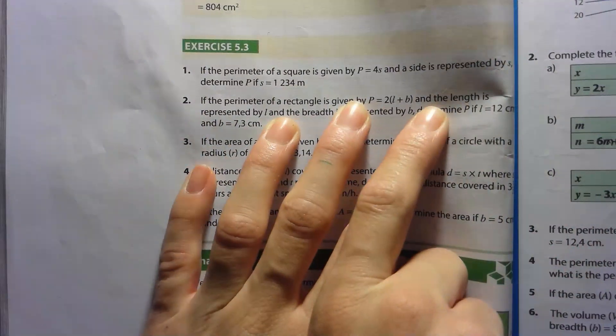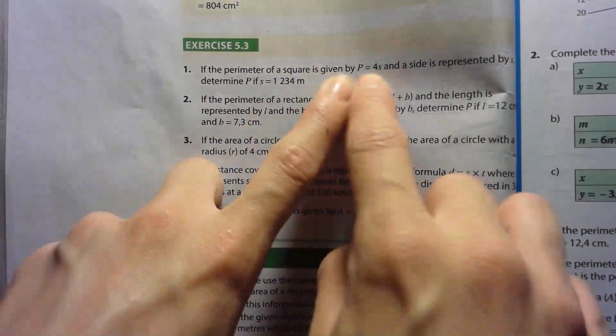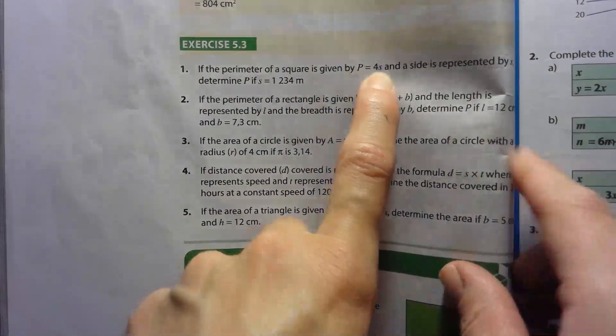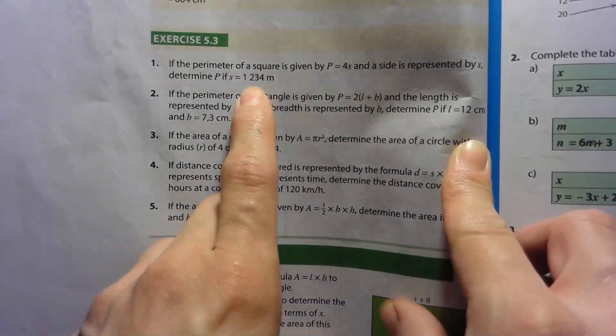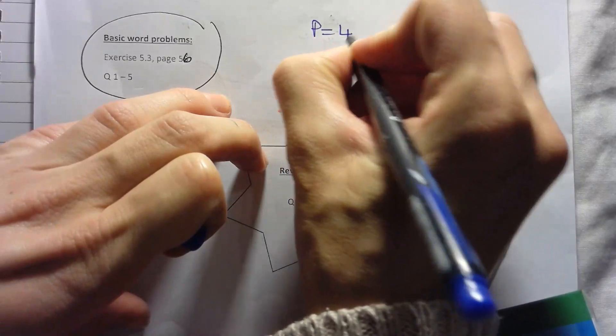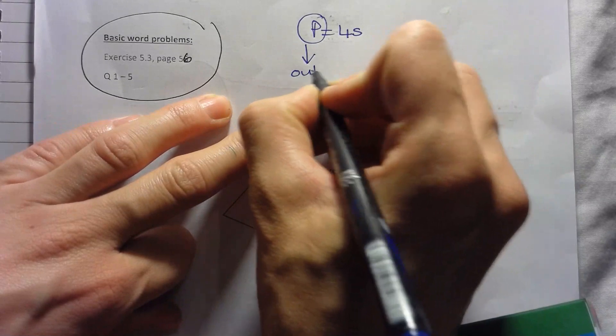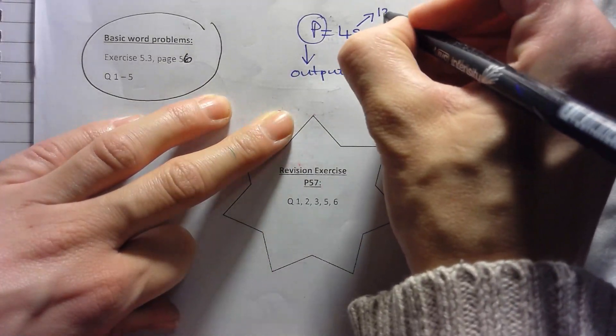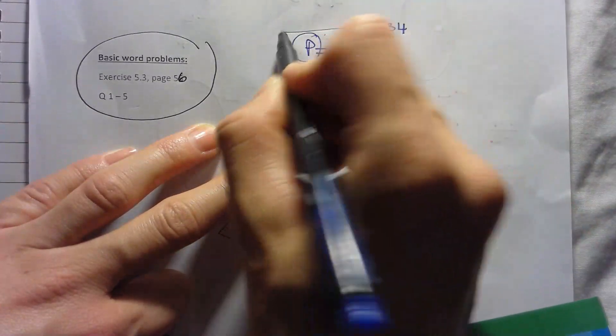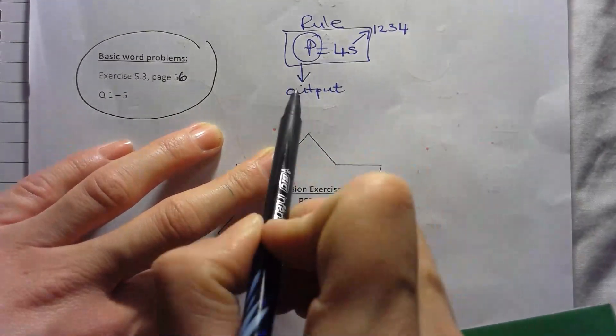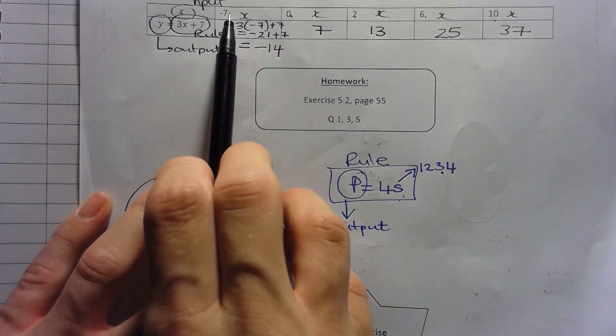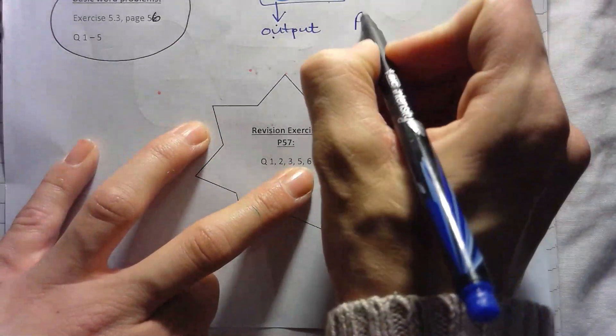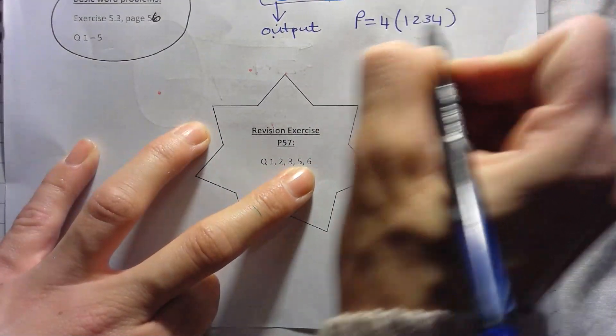There are some basic word problems here. I want you to try them out. I'll do the first one with you, though, so you can get the idea. It says, if the perimeter of a square is given by P equals 4S. There's your rule. And a side is represented by S. Determine P if S is 1, 2, 3, 4 meters. So here's the rule. S is the input. They want you to work out the output. So it's the same idea. But now they're just giving to you a word. So P equals 4S. So P, they're asking you for what the perimeter is. So that's the output. What are we getting if our input is 1, 2, 3, 4 meters? So this whole thing is the rule. So what is your perimeter? What is your output when your side is 1, 2, 3, 4?